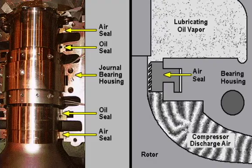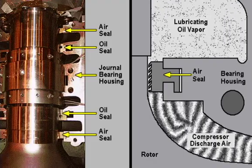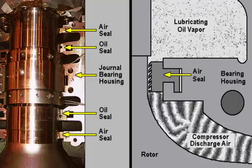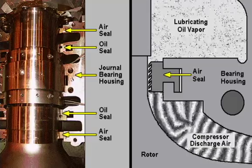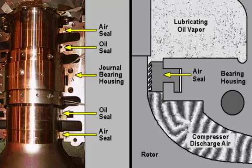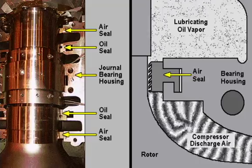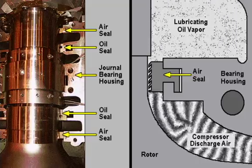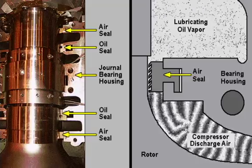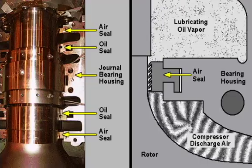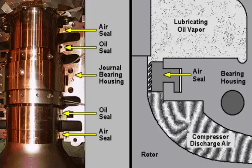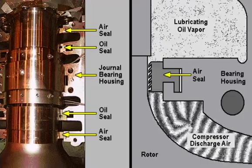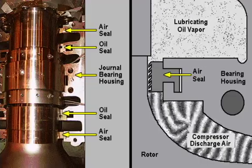The air seals the bearings by containing within the bearing housing any lubricating fluid that leaks past the oil deflectors. Air is directed to both ends of each bearing housing and flows along the journal into the bearing cavity, providing a pressure barrier to the lubricating fluid.